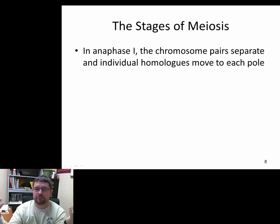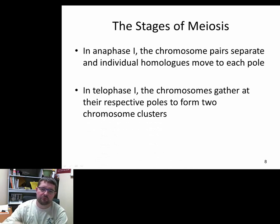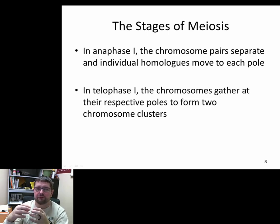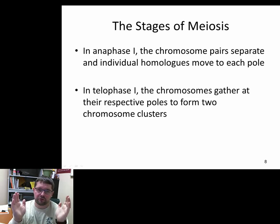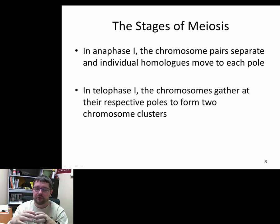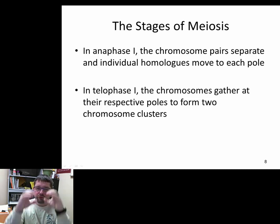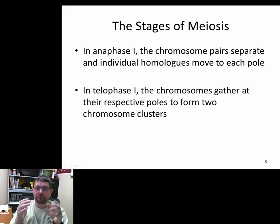Anaphase one proceeds just like anaphase in mitosis: the homologues are separated from each other as the cohesive forces are divided, and homologues move to separate poles. In telophase one, a new nuclear envelope forms around the chromosomes at the poles, and they may disassociate with histones. Depending on the species, the two new cells may enter a G1 phase briefly to increase their size a little bit before proceeding.